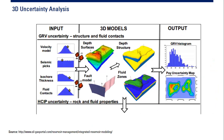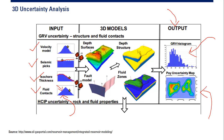First input: gross rock volume uncertainty, including structure and fluid contact — velocity model, seismic picks, isochore thickness, and fluid contacts. These have possible statistical distributions such as bell curve, constant value, triangle, or skewed left distributions. This will influence the depth surface, depth structure, fault model, and fluid contact, giving us as output a gross rock volume histogram and pay uncertainty map, so we can analyze the uncertainty.